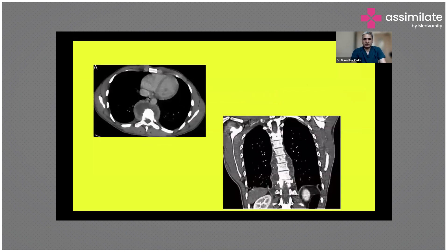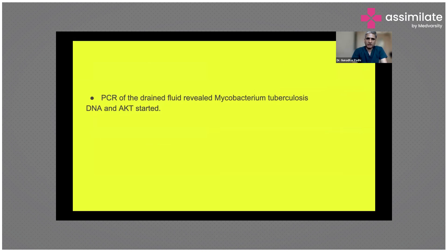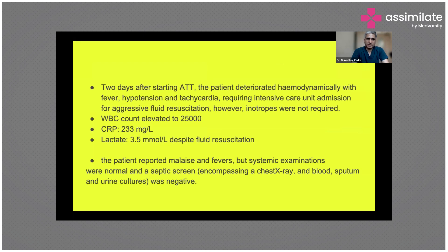You can see the CT scan of the same patient showing collections around the vertebra, which is quite obvious, with no other major abnormality noted. As a routine protocol, the fluid was drained. We picked L-Gridans and PCR of the fluid revealed Mycobacterium tuberculosis. The PCR test was sent and anti-tuberculosis therapy (AKT) was started.